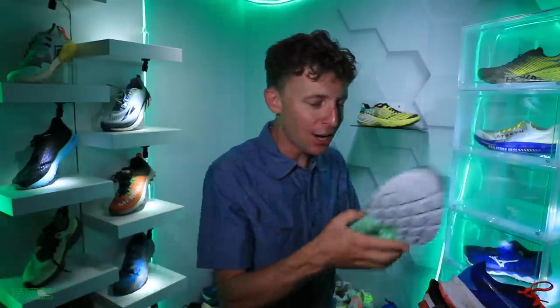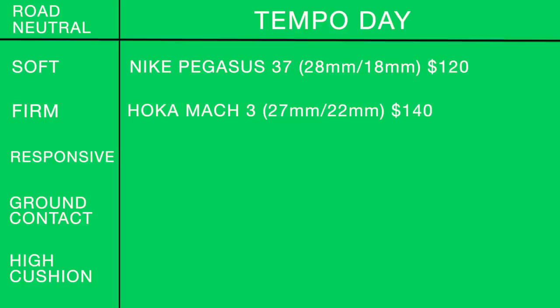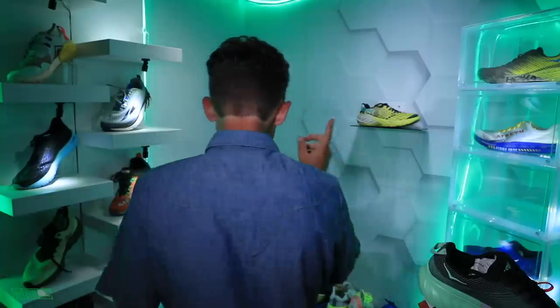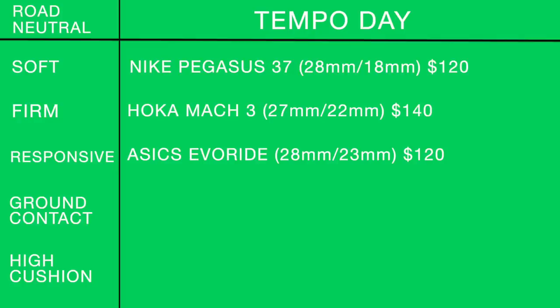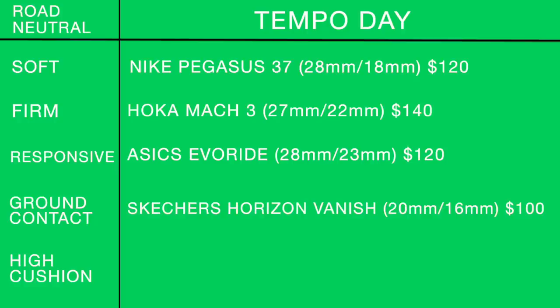For a firm landing tempo day shoe: the Hoka Mach 3 — 27mm heel, 22mm forefoot, $140. I didn't really enjoy this shoe; it's just a firm landing, and I'm not the only one who thinks that. The Hoka Mach 3 wasn't at the top of my list. For a responsive tempo ride: the Asics EvoRide — I really enjoyed this shoe. 28mm heel, 23mm forefoot, $120.